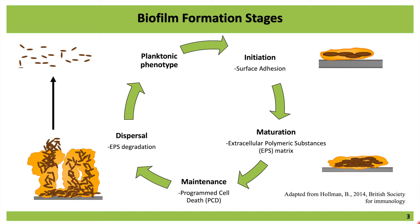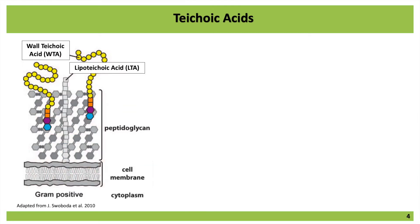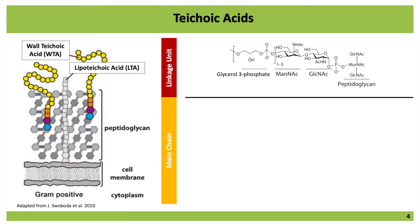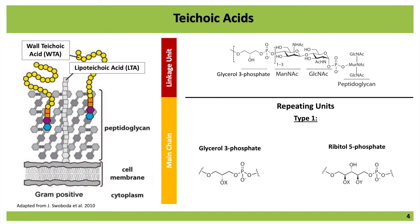For the initiation stage, teichoic acids are an important part. There are two types: the wall teichoic acids that are attached to the peptidoglycan, and the lipoteichoic acids that are anchored in the cell membrane. Generally, they have a topology that comprises a linkage unit and a main chain. The linkage unit is made of a disaccharide and a small chain of glycerol-3-phosphate, and then the main chain is made up of several different repeating units that can be glycerol-3-phosphate, as this is the most common.